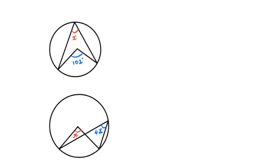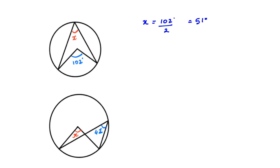Let's solve a few examples. In this case we have been given the angle at the circle center and we need to find the angle at the circumference. So we are going to divide 102 by 2, which is 51, so x is 51. The next question: the angle at the circumference has been given to us and we want to find the angle at the center. So x is equal to 42 times 2, which is 84 degrees.